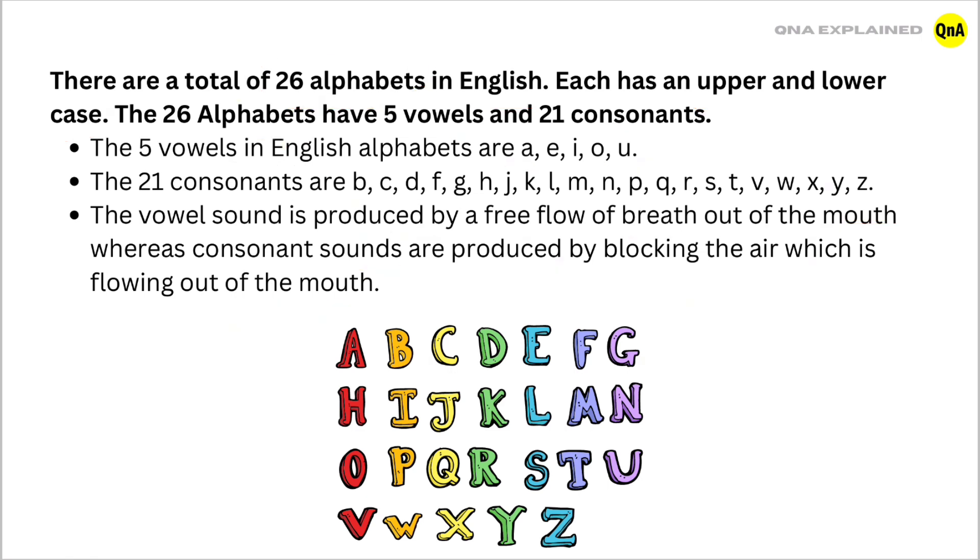So the answer is there are 21 consonants in English alphabet.